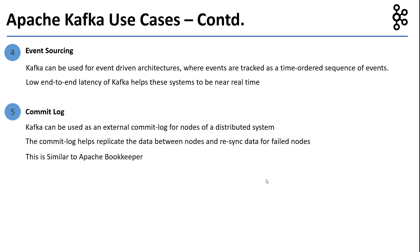Five, Kafka can be used for commit log use cases. Kafka can be used as an external commit log for nodes of a distributed system. The commit log helps replicate the data between nodes and resync the data for failed nodes. This is similar in functionality to Apache Bookkeeper.